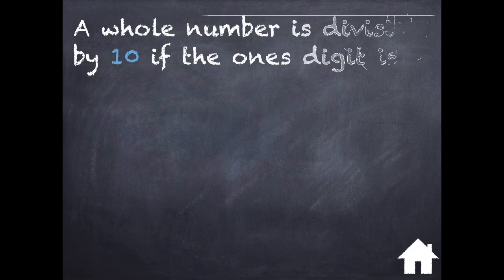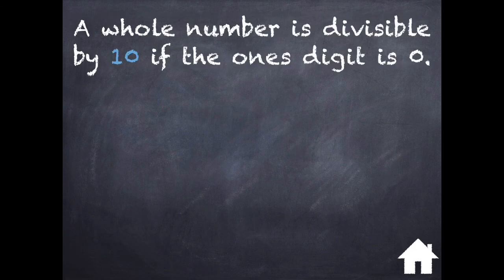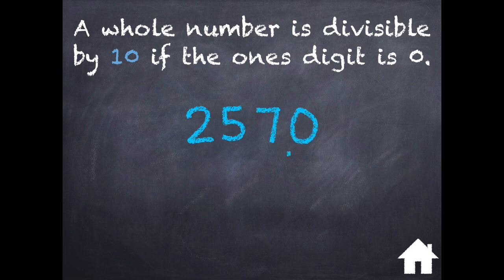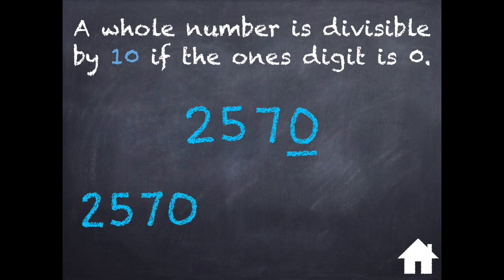A whole number is divisible by 10 if the 1's digit is 0. If we look at the number 2570, we can see that the last digit in the 1's place value is a 0, so I know this number is divisible by 10. 2570 divided by 10 equals 257.